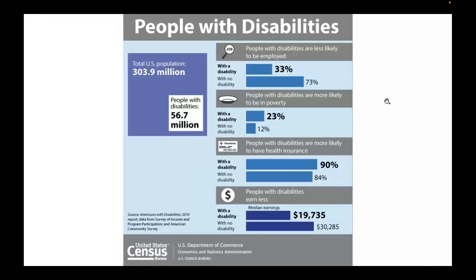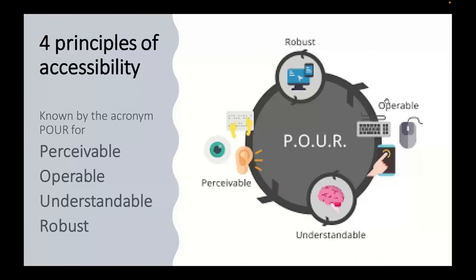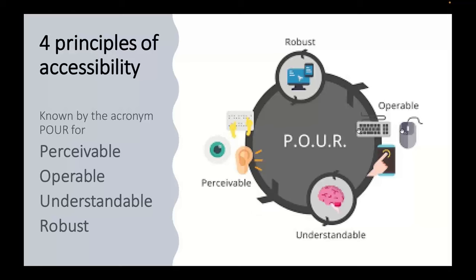Four principles of accessibility — the acronym POUR: Perceivable, Operable, Understandable, and Robust. Your audience should be able to perceive the information. After that, your website should be operable — I'll show you websites that are completely not operable. It should be understandable and easy to get, and robust.